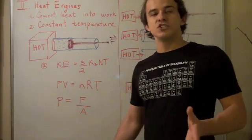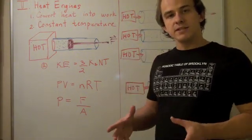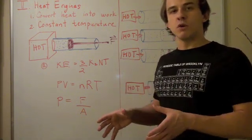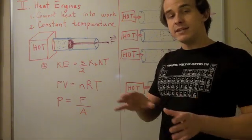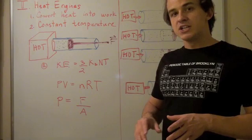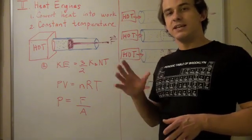So let's see what heat engines are. Heat engines are basically systems or mechanisms that convert one form of energy into a second form of energy, namely heat into work. And this occurs under constant temperature. So let's see what the layout of a heat engine is.